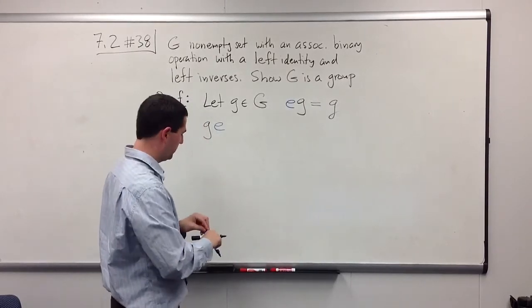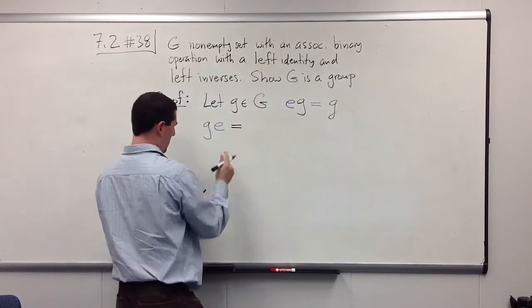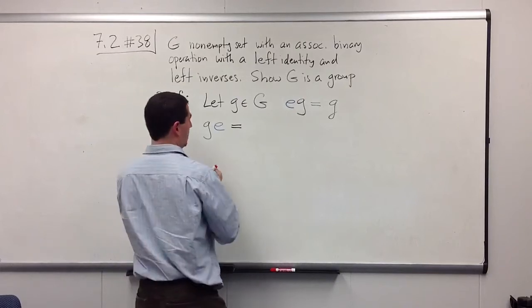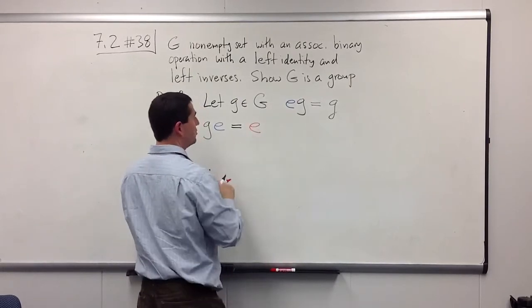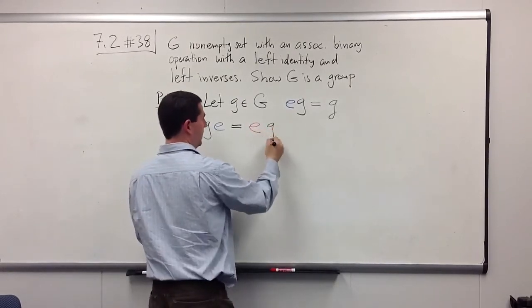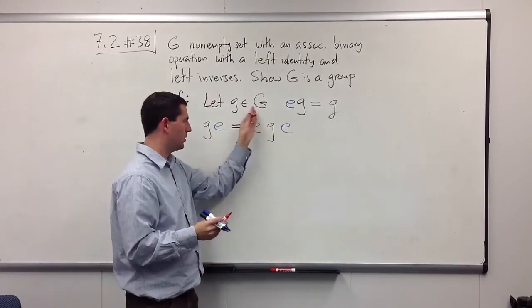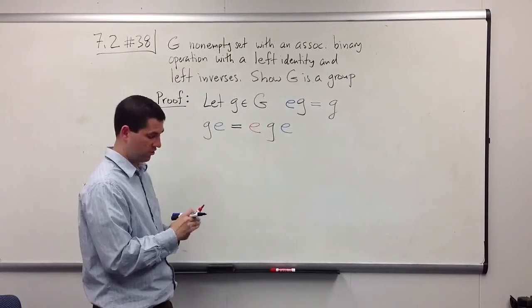The first thing we're going to do is we're going to start from g*e, and we're going to multiply it on the left by our identity. When we do that, of course, it doesn't change anything, because this was a left identity. So I haven't changed anything. e times anything when you put the e on the left, same thing as you started with.